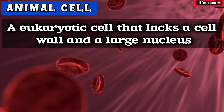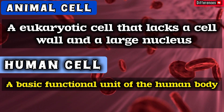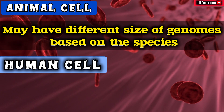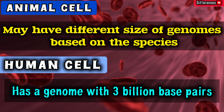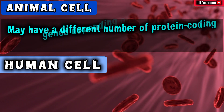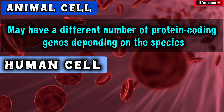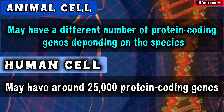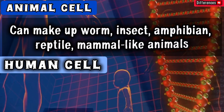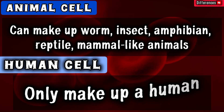Second, a human cell is the basic functional unit of the human body. Animal cells may have different genome sizes based on the species, while the human cell has a genome with 3 billion base pairs. Animal cells may have a different number of protein-coding genes depending on the species, while human cells have around 25,000 protein-coding genes. Animal cells can make up worms, insects, amphibians, reptiles, and mammals, while human cells only make up a human.